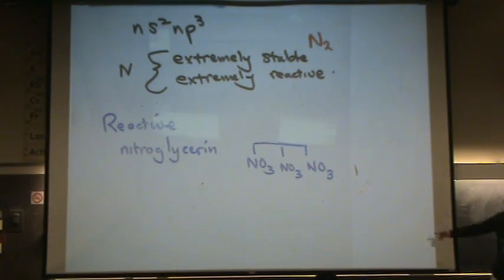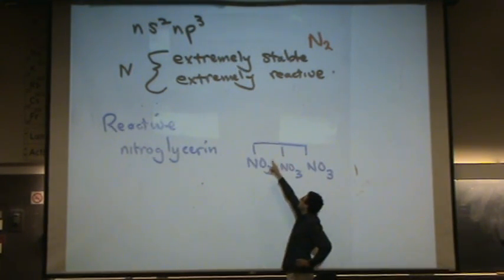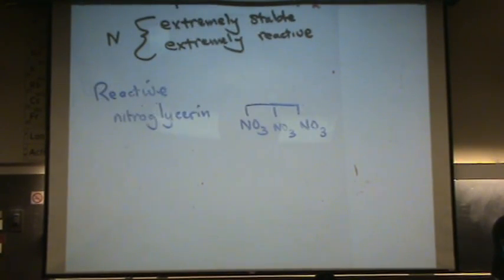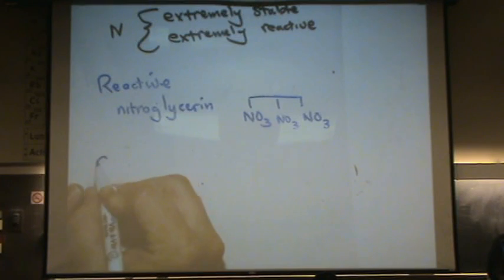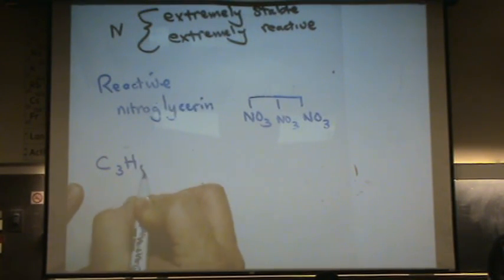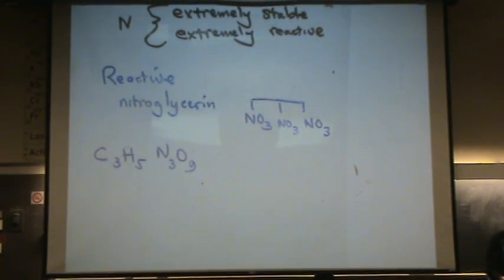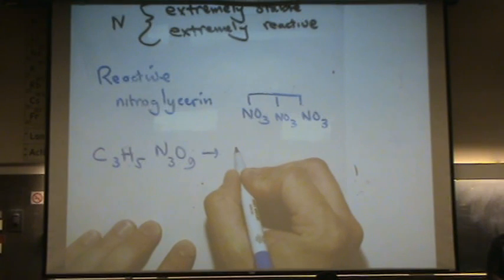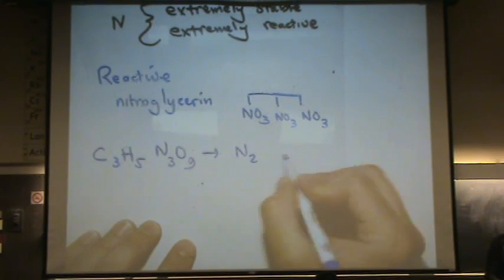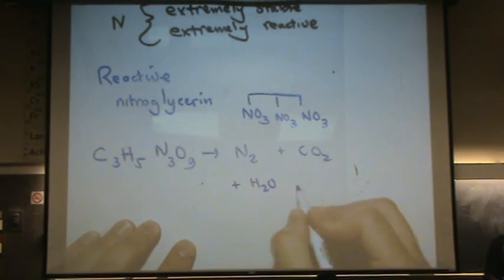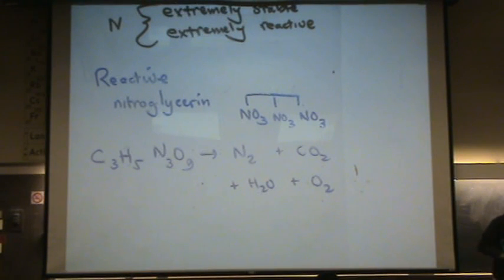So nitroglycerin. The glycerin is here at these, each vertice, there's a carbon. So there's three carbons involved in this. This compound looks as follows. If I write out the molecular formula. And it reacts as follows. And I want to write out this reaction so you can see it. N2, CO2, H2O, and O2. Why don't you try to balance this.